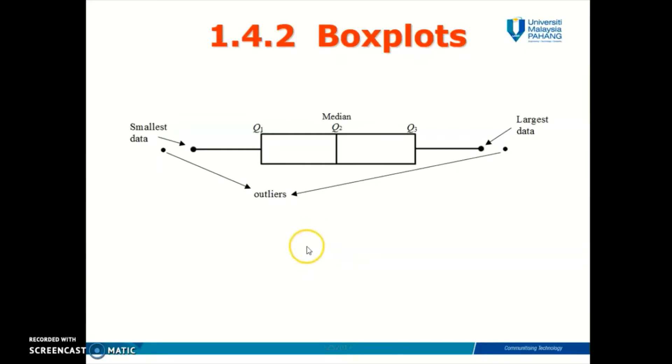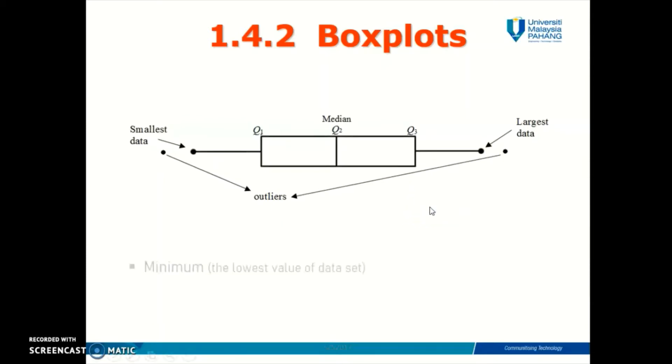A box plot is also known as a box and whiskers plot because there's a box and there are two whiskers, the left whisker and the right whiskers. This is a graphical representation of the five number summaries of a data set.